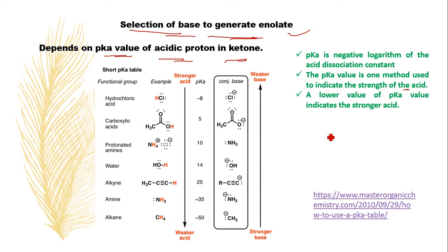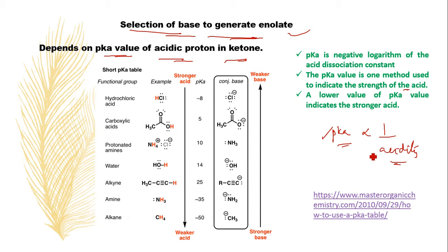If the pKa value is very low, it is considered a strong acid. pKa is inversely proportional to acidity — a less value of pKa means a strong acid; a high value of pKa means it is basic. For example, consider some molecules: hydrochloric acid, carboxylic acid, protonated amines, water, and alkylamines.